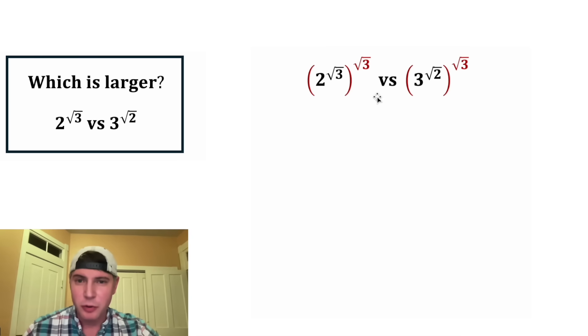So if we choose something like square root of three, this'll be really clean, but this is still gonna be a radical. Or we could do square root of two and this would be clean and this would be a radical. I'm not sure which one's best. Let's try the square root of three.